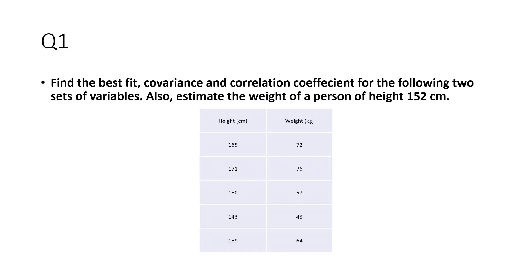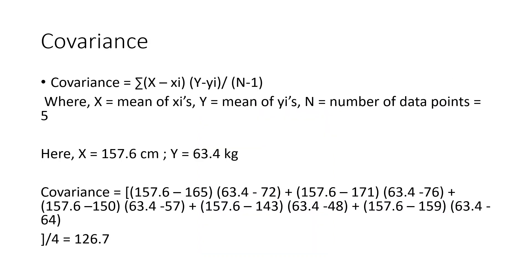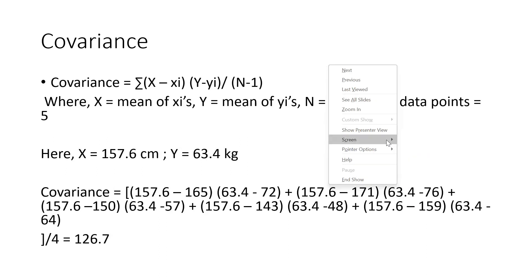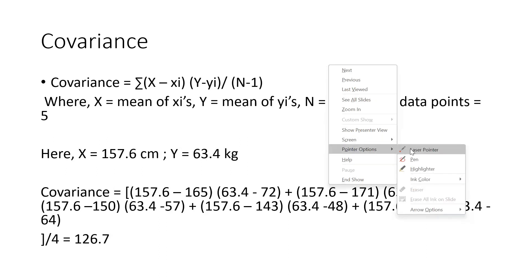The first question is: given some data, you need to find the best fit, covariance, correlation coefficient, and things like that, and also estimate the weight of a person of height 152 centimeters. Here is a dataset with height and weight of five individuals, and you need to calculate some statistics. Let's go and do those. First is covariance.